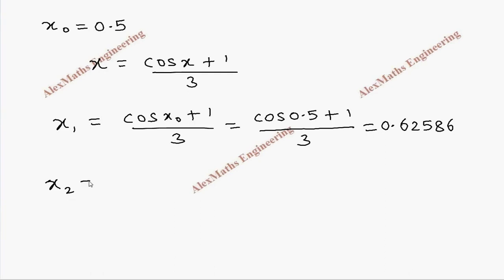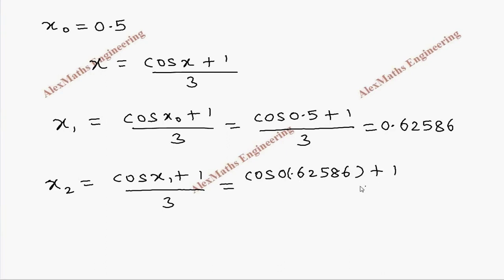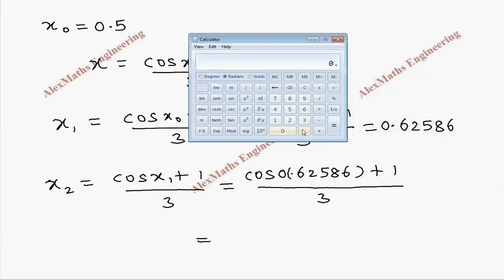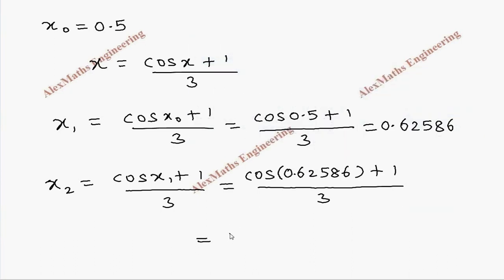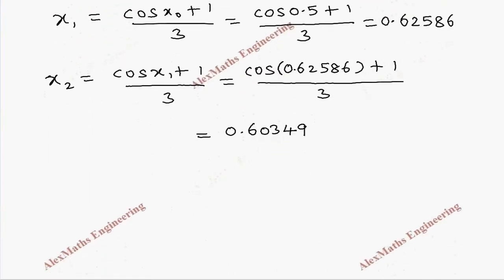Now x2 = (cos x1 + 1) / 3 = (cos 0.62586 + 1) / 3. Calculating using the calculator: 0.62586, cos value, plus 1, whole divided by 3. When we round off to 5 decimal places, we get x2 = 0.60349.